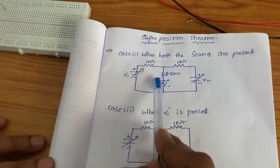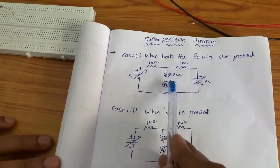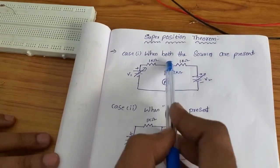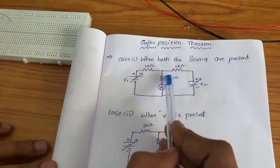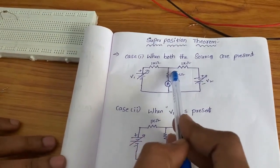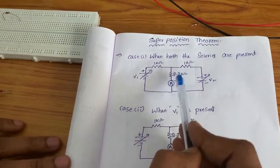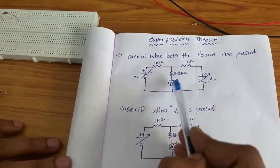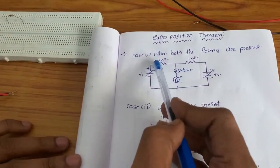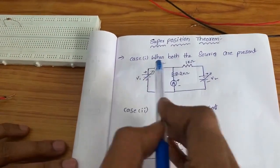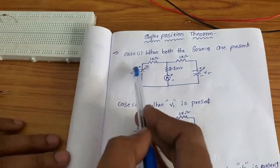This response we will find out by using the ammeter. We have to find out the current in this branch, the 2.2 kilo ohm resistor, by using the ammeter. Let's connect the circuit as per the circuit diagram.